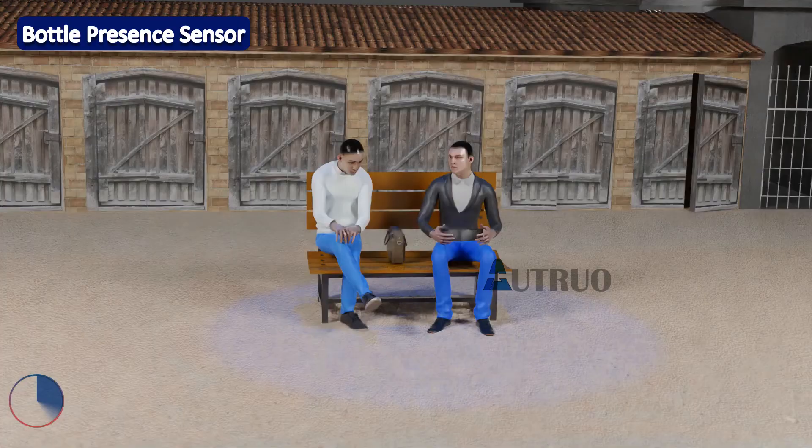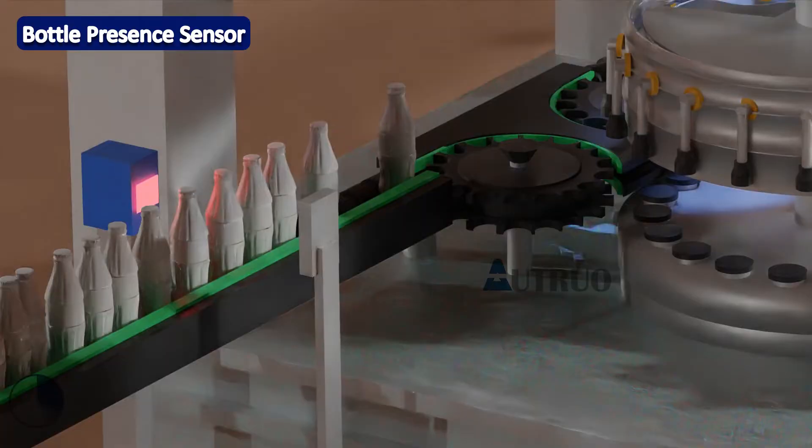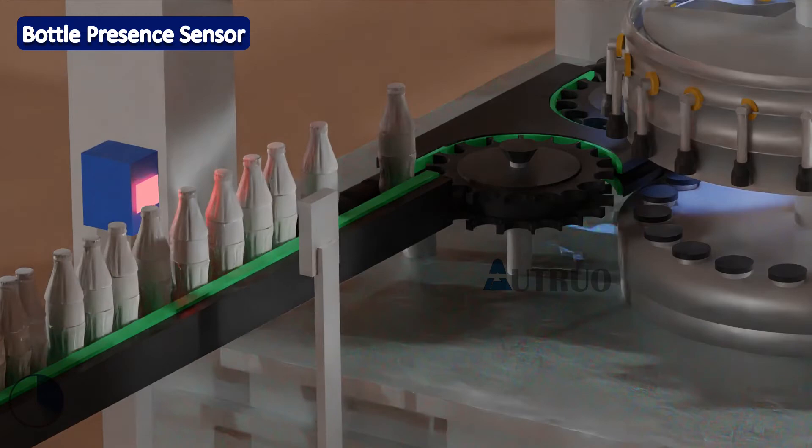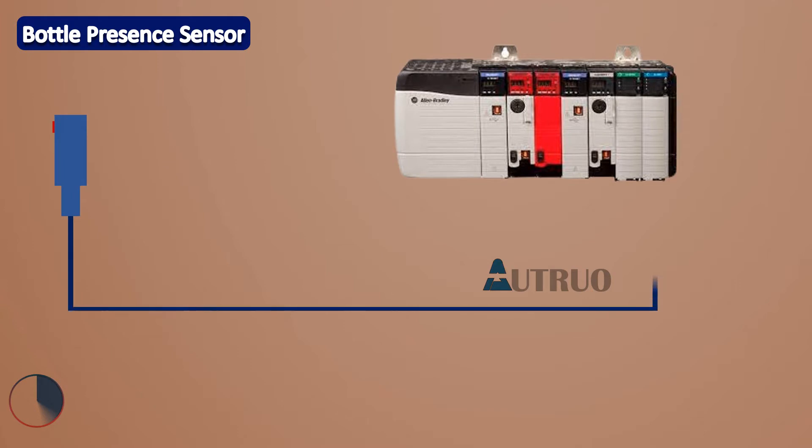At the infeed of the labeler lies an electronic sensor. This sensor is of different types, but the most common one is a photoelectric sensor. So basically, when the sensor detects the presence of a bottle at infeed, the sensor will send an electric signal to the PLC.